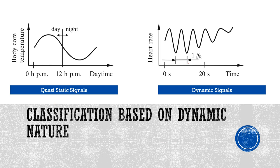Now let's look at classification based on the dynamicity of signals. We can classify signals into quasi-static signals and dynamic signals. Quasi-static or static signals stay at a steady state level which might change very slowly over time. Dynamic signals change extensively — for example, heart rate changes when you are running, slowing down, relaxing, or sleeping. It becomes very high when you are anxious and very low at other times. Body core temperature, on the other hand, changes very slowly — it takes almost 12 hours to change — so it is called quasi-static.